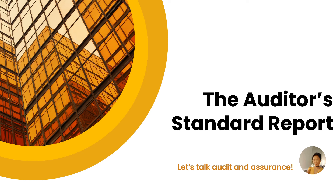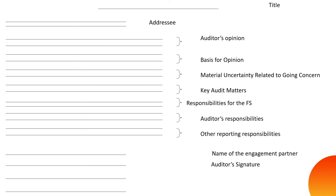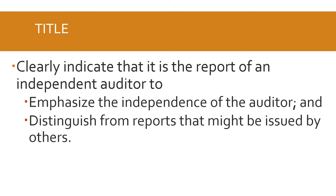Now let's look at the standard auditor's report using PSA 700 as our main point of reference. The elements of a standard unmodified report will be reviewed in detail. Starting with the very first element — the title. The title should clearly indicate that it is the report of an independent auditor, in order to emphasize the auditor's independence — both in fact and in appearance — and to distinguish the report from those issued by management, internal auditors, or other analysts.